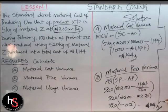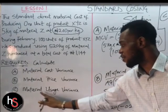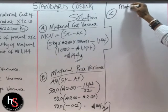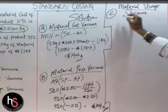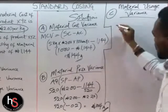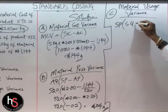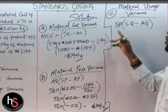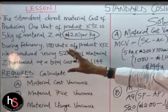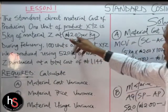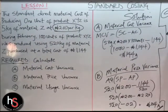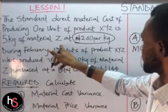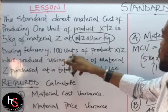Now for part C: Material Usage Variance. The formula is: Standard Price times (Standard Quantity minus Actual Quantity). The standard price is 2 Naira. To find the standard quantity, we multiply 5 kg per unit by 100 units produced during February, giving us 500 kg. The actual quantity is 520 kg.